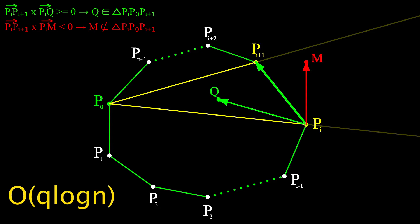As you can see, this algorithm uses log n operations for each of q queries to find the sector and some constant time to determine belonging to the triangle. Thus, total time complexity is O(q log n). Thank you.